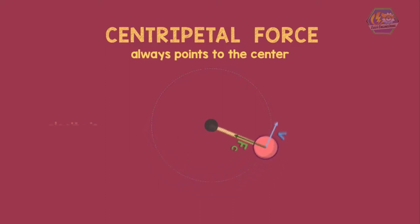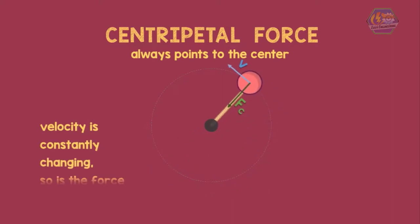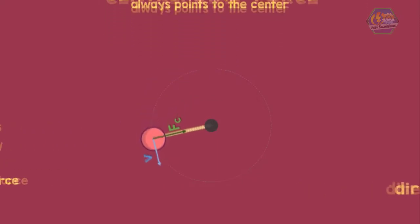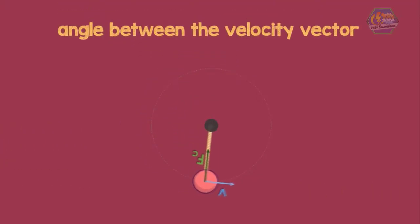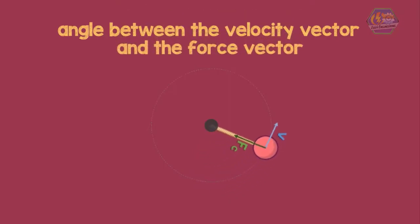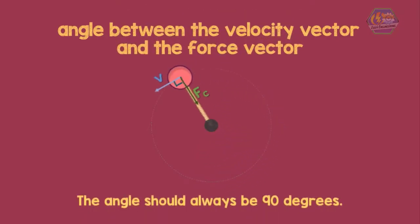Take note that I am not referring to the strength of the force but rather its direction. As long as the force exerts itself, the velocity continues to change its direction. Another critical thing to consider is the angle between the velocity vector and the force vector. The angle should always be 90 degrees.